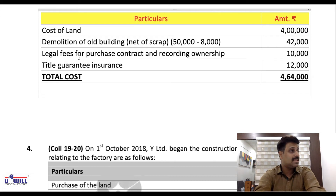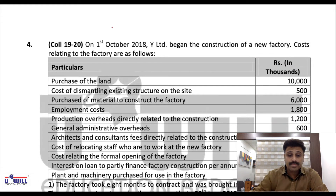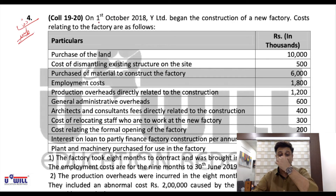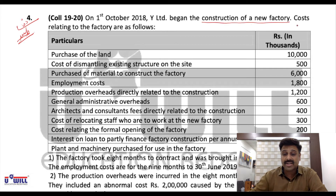Final answer: 4,64,000. Now look at Question Number 4 — this is an important question where we also have to give reasons for including or not including each cost item.